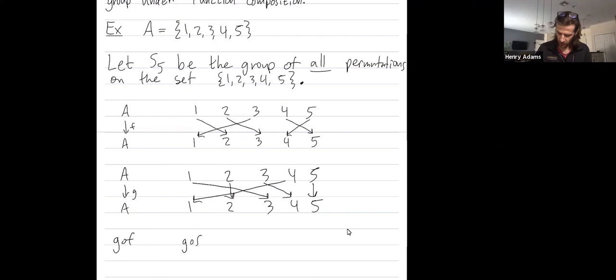Because if I wanted to evaluate G composed of F of, say, 2, that would be defined as G of F of 2. Which, in this particular case, F of 2 is 3.